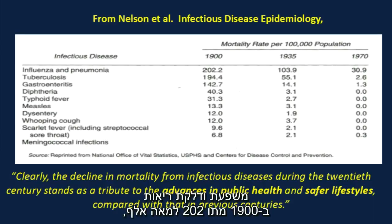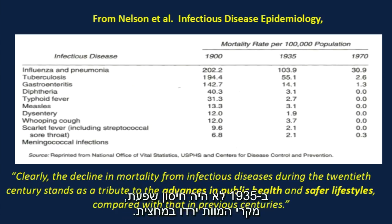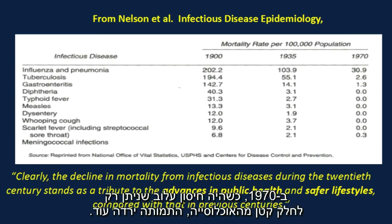Influenza and pneumonia: in 1900, 202 per 100,000 died. By 1935, there was no influenza vaccine, and we're down by half. By 1970, when there was a very poor vaccine only given to a small amount of the population, we're down further.